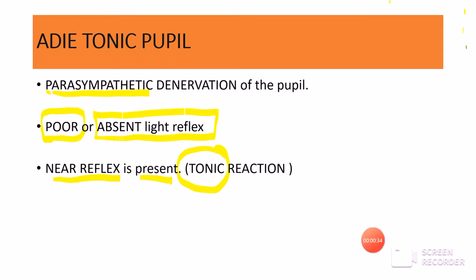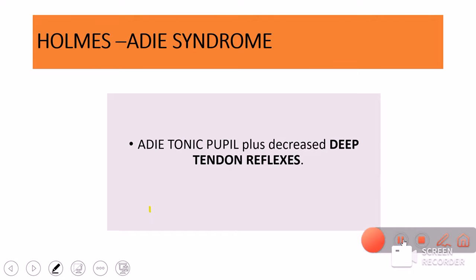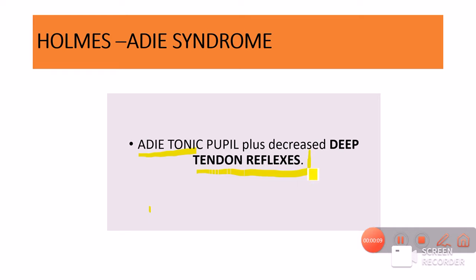Adie is the name of the scientist who actually discovered it. In certain cases, the Adie's tonic pupil will be associated with decreased deep tendon reflexes. Such an Adie's tonic pupil is also called a systemic Adie's tonic pupil, or it is also called Holmes-Adie syndrome. So in Holmes-Adie syndrome, not just we have the Adie's tonic pupil, but along with that we will have decreased deep tendon reflexes.